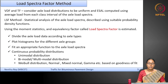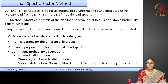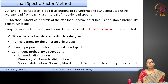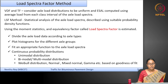In the VDF or TF — that is the vehicle damage factor or the truck factor — what we have done is that we considered the axle load distribution to be uniform in a vehicle class interval. The equivalent single axle loads were computed using the average load from each class interval of that load spectra. Whereas, in this load spectra factor method, you are not going to take an average value from a load bin or load group and find the ESAL.